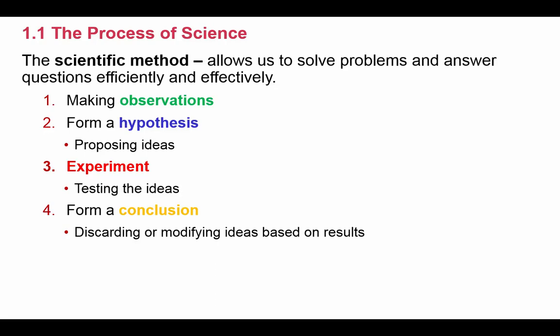One of the objectives is that you need to be able to list the steps of the scientific method. They are: step one, making observations; step two, forming a hypothesis; step three, doing an experiment; and step four, forming a conclusion. We're going to break those four steps down and look at specific details about each one.